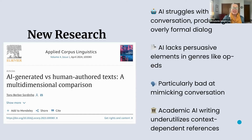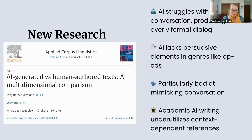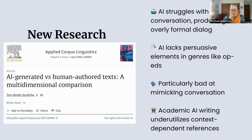The third finding is that academic AI writing underutilized context-dependent references. It populated citations, but they weren't well connected to the surrounding language. This is particularly problematic because some people really do use ChatGPT as a research tool to generate academic text — it could hallucinate the author and the findings. Even beyond that, it wasn't a natural way to input a reference, which is hard for any writer. But the AI — again, this was GPT 3.5 — wasn't doing that very well.